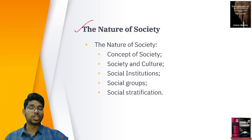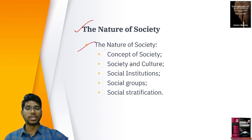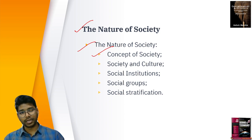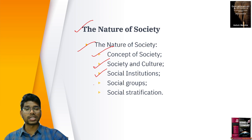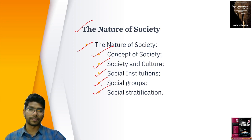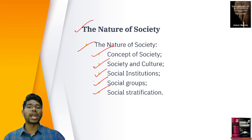The nature of society covers the concept of society, how society and culture are linked, social institutions, social groups, and social stratification. Marriage is a social institution, religion is a social institution. The Varna system is social stratification. All these different aspects of society are studied under the nature of society.